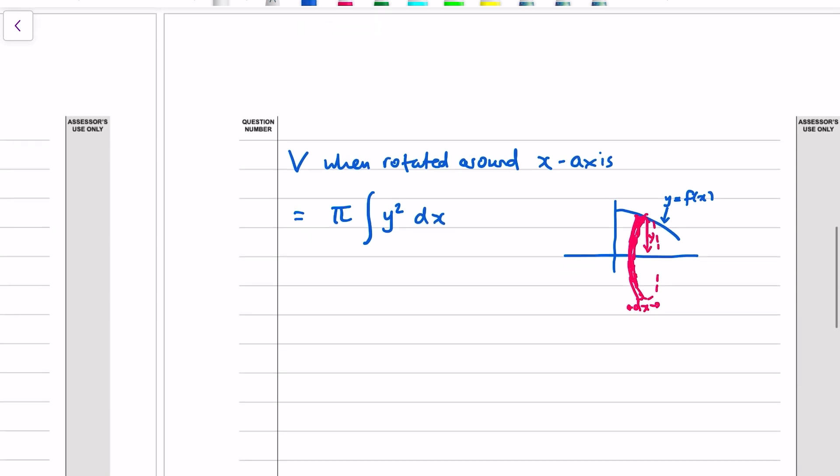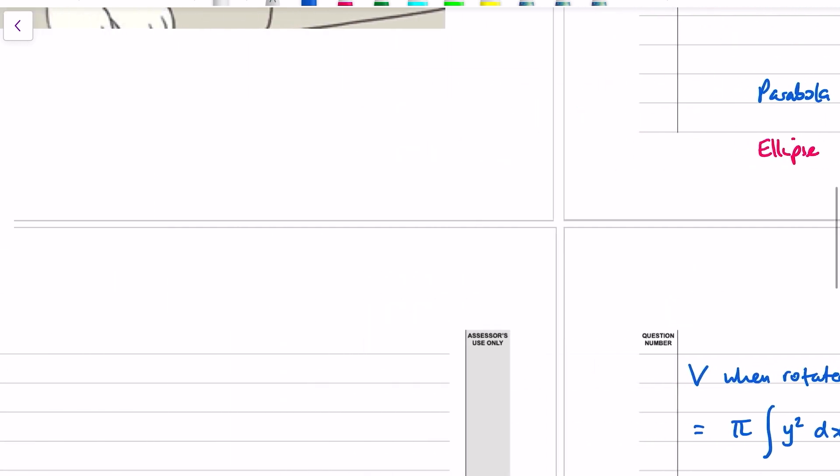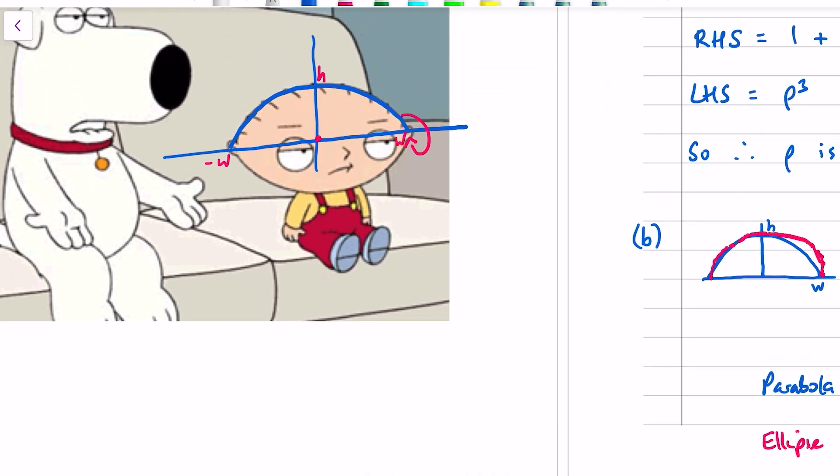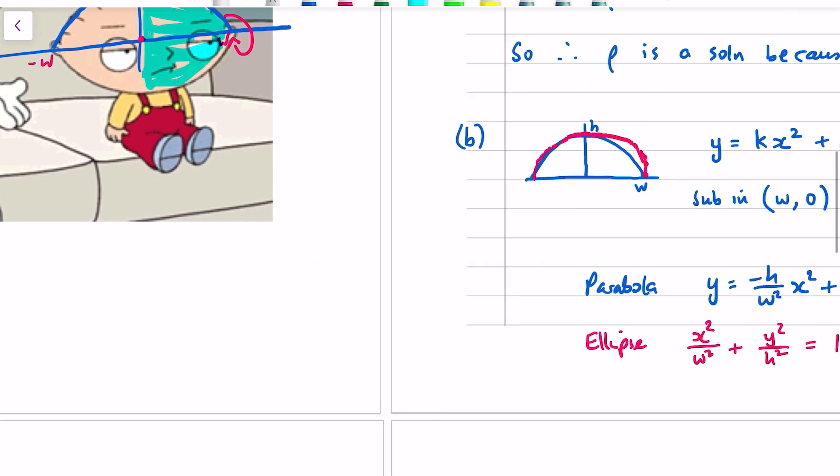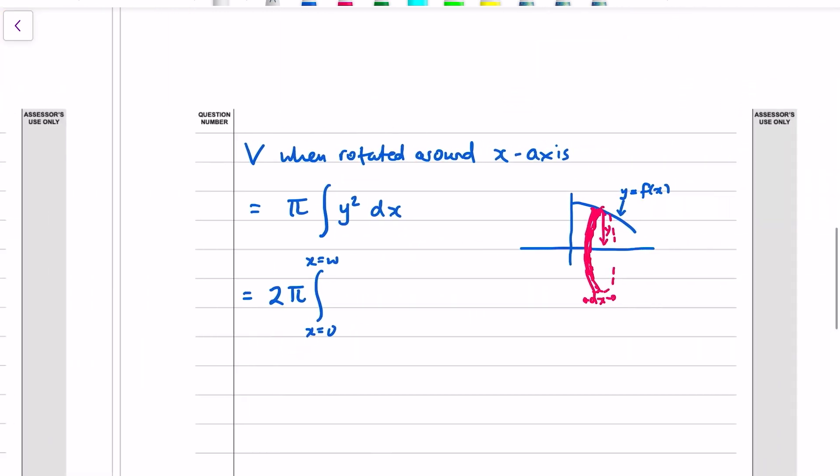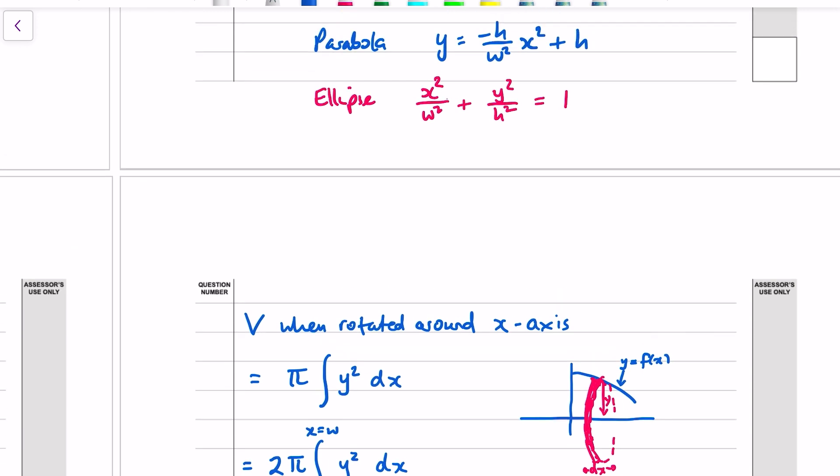Okay, so we can use the symmetry of Stewie Griffin's head. We don't need to integrate from the far left to the far right, because we can just go 2 pi, and then we can integrate from x equals 0 to x equals w. So I'm just going to say that the volume when I rotate this section around, I'm going to get the volume of half his head, this is actually quite satisfying, and then times by 2 will give us the volume of the total head when rotated. Okay, the important thing to realize is, unlike finding areas where we integrate the function, we're integrating the function squared. That's actually quite useful for the ellipse one, because there's already a y squared in the formula, but for the parabola one, we need to find y squared.